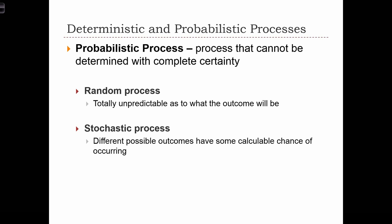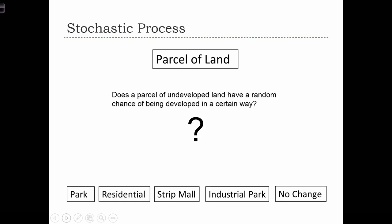Random processes are totally unpredictable, whereas stochastic ones provide different levels of chance for different outcomes to occur. Imagine the example of a model that tries to predict how the development process takes place — here we're talking about developing an empty parcel of land. We know that this parcel can be developed into a park, a residential area, a mall, an industrial park, or left undeveloped altogether.